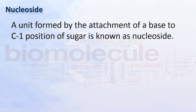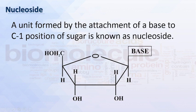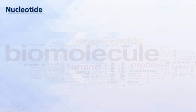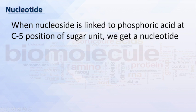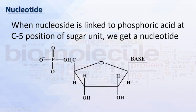A unit formed by the attachment of a base to carbon-1 position of sugar is known as a nucleoside. A nucleotide is formed when a nucleoside is linked to phosphoric acid at the carbon-5 position of the sugar unit. That's the structure of a nucleotide.